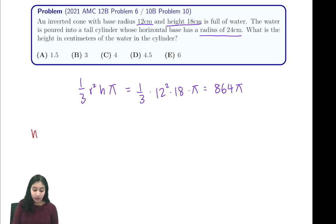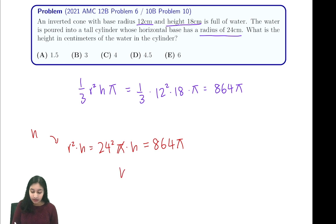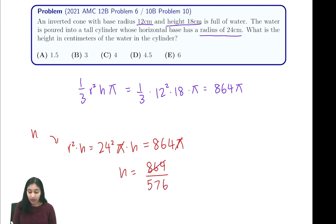Let the height be some variable h. Then we know the volume from the formula of a cylinder is π r² times height, which is 24 squared times π times h, and we know this is equal to 864π. Dividing gives us h equals 864 over 576, and simplifying this fraction gives 3 over 2.